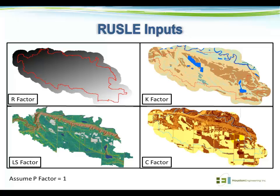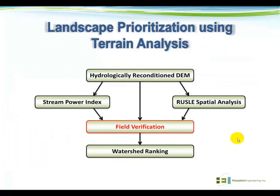Typically, we assume the P factor in the RUSLE equation equals one, indicating that no BMPs or conservation measures are being implemented on the landscape. This gives us a conservative estimate of how much sediment could potentially be eroded. If we had good information on conservation measures, that could definitely be incorporated into RUSLE. Once all this information is pulled together, we really encourage going out to actually verify what we're seeing on the computer screen with what we see in the field. We work closely with project partners on this step, and in previous projects our computer analyses have matched field conditions very well.